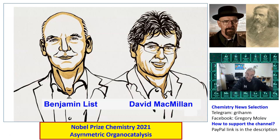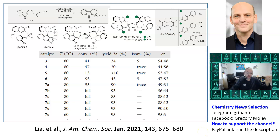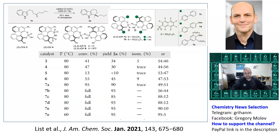Benjamin List is still developing the asymmetric organocatalysis topic. I'm going to show some of his recent papers in the Journal of the American Chemical Society from 2021. They look in the literature for reactions which are very useful in the pharmaceutical industry, for example, to synthesize drugs, pesticides, or anything like that — transformations which are apparently possible in one step but for some reason have not been done so far. Then they try to find a catalyst which can do it in one step.